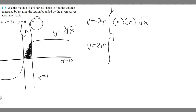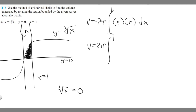In this case they give us x equals one as the upper bound, but we need to find the lower bound. What you want to do is take your two curves and set them equal. So if you take cube root of x and set it equal to zero, you can solve for x. The only x value that makes this equal to zero is just zero. So a equals zero and b equals one — the integral goes from zero to one.